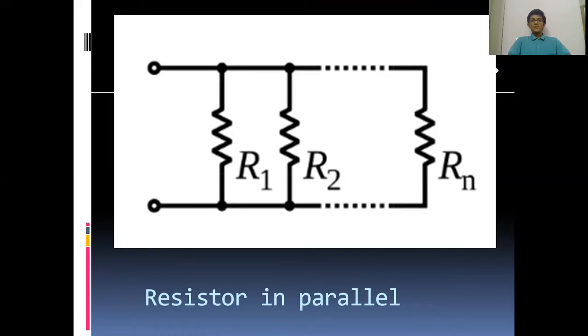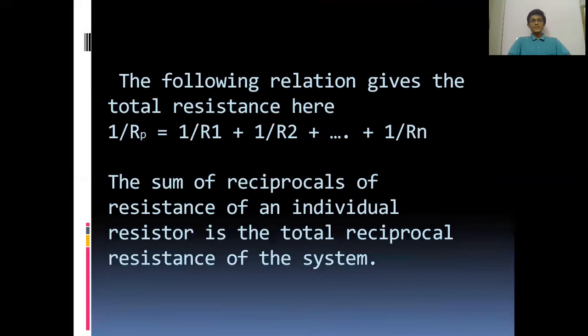The following relation gives the total resistance: 1/Rp = 1/R1 + 1/R2 + ... + 1/Rn. The sum of reciprocals of resistance of individual resistors is the total reciprocal resistance of the system.